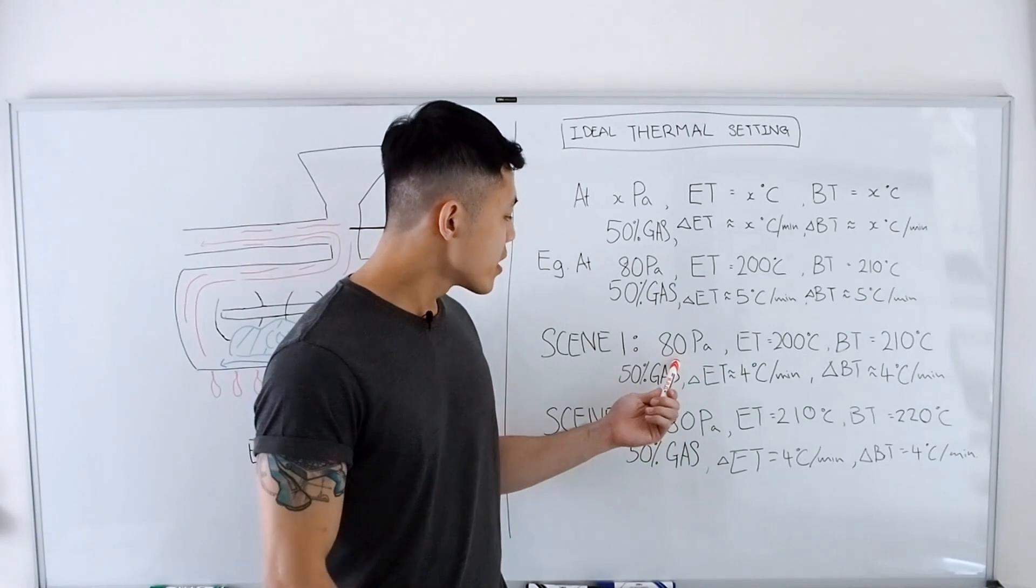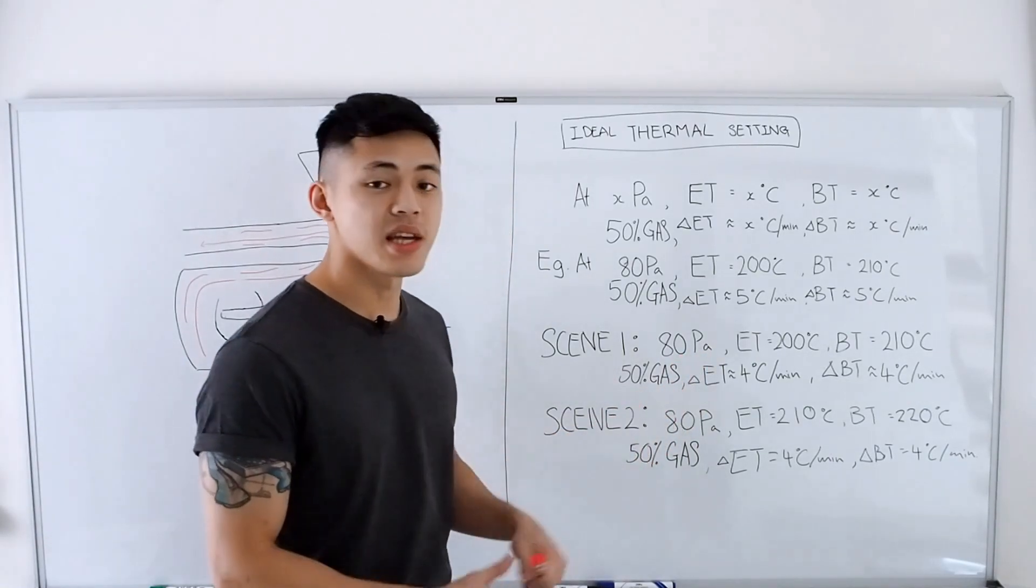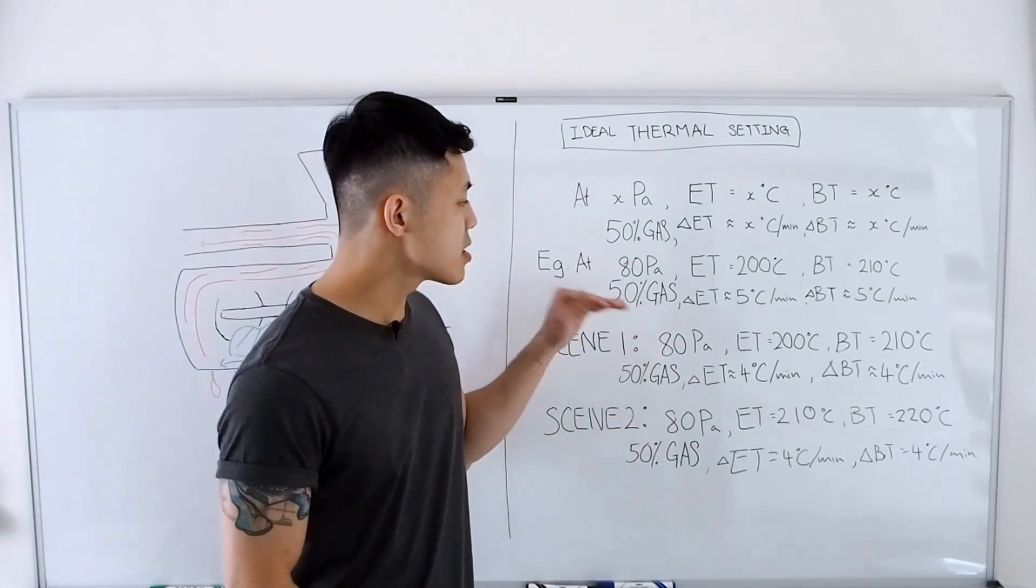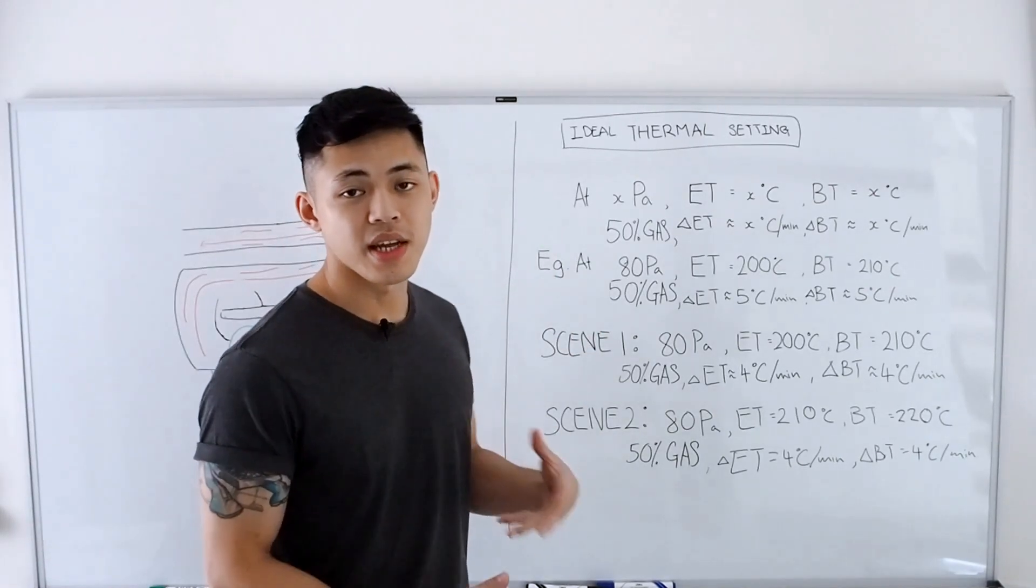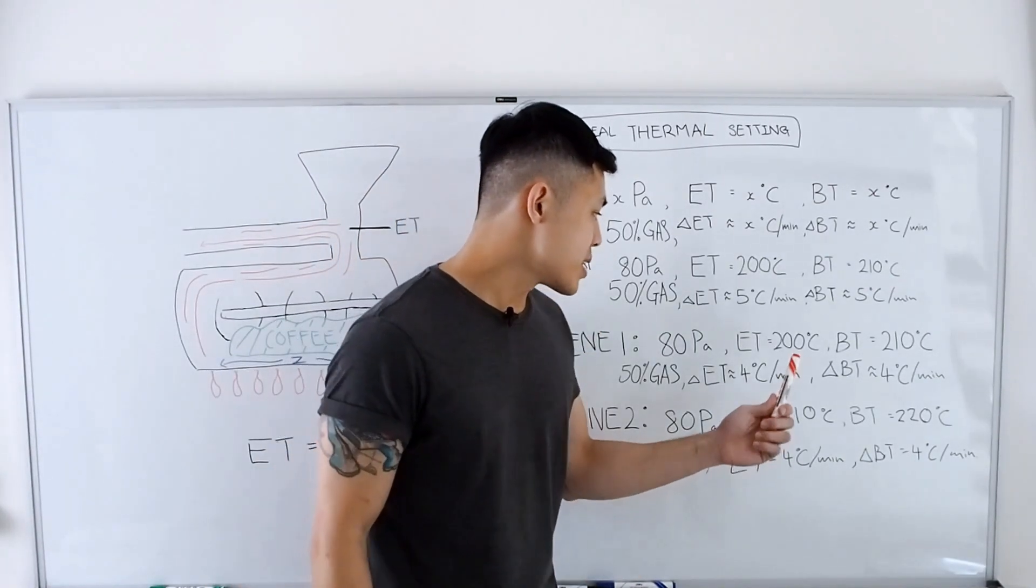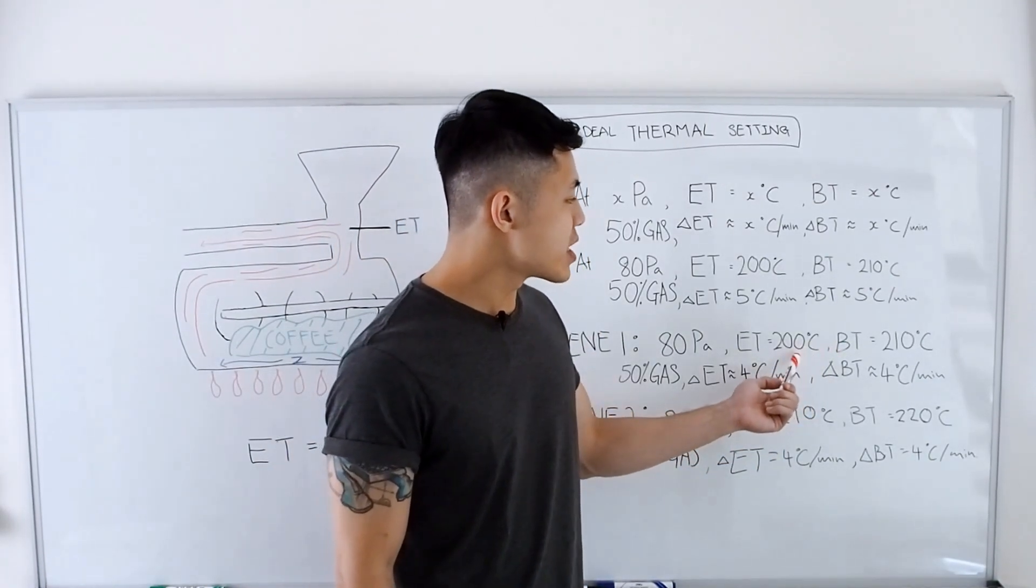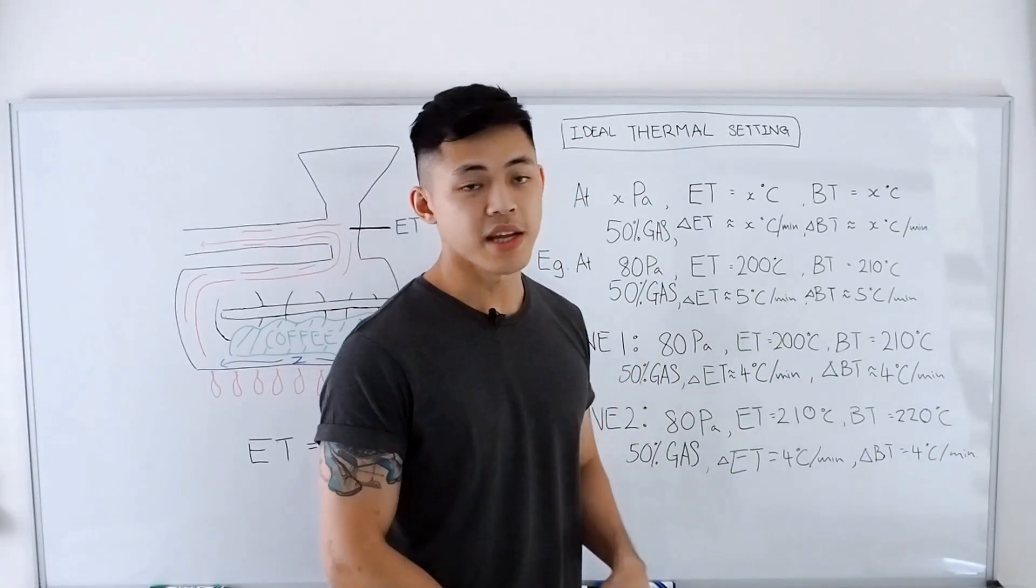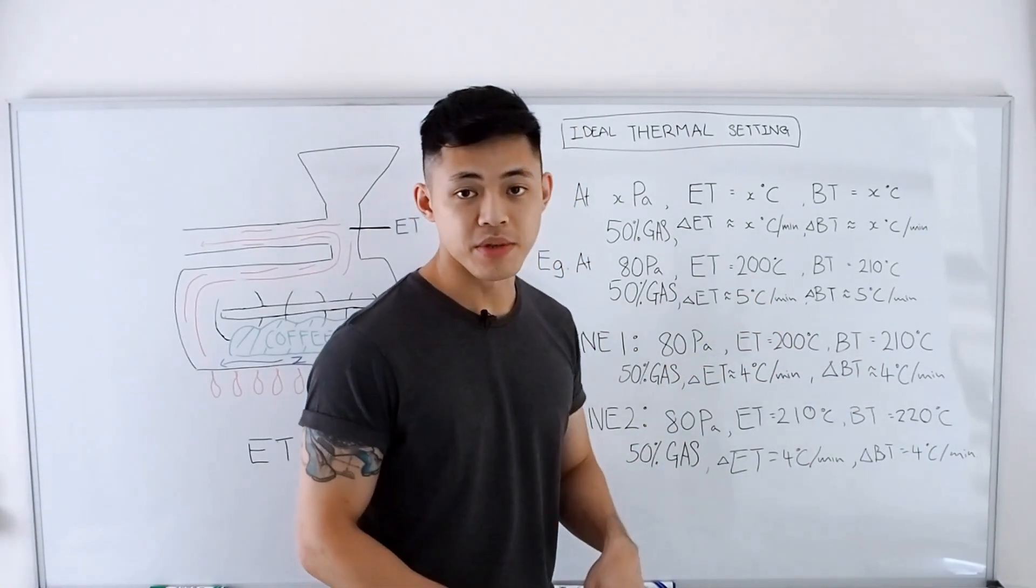Now the first scenario, we have the airflow and the gas set to be the same and constant as the ideal thermal setting that we want. The temperature of our ET and BT measures at 200 and 210—that checks out with our ideal thermal settings.